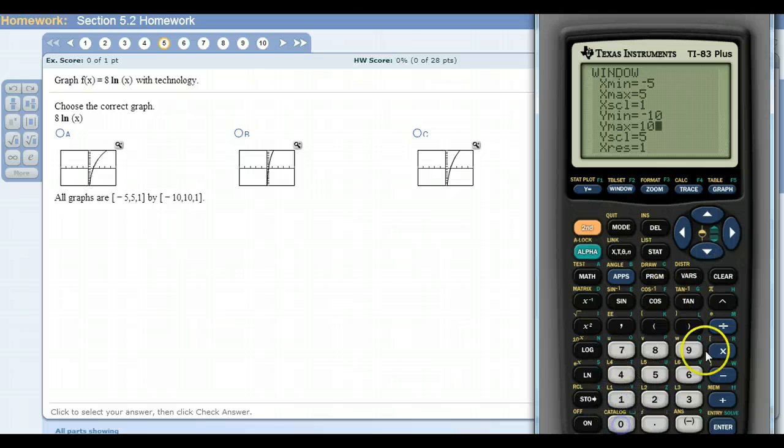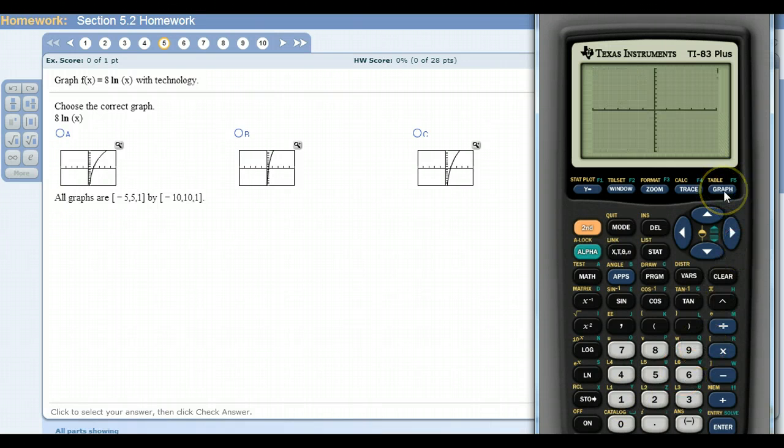Okay, now when I hit graph, now all I'm doing is trying to match up what I see on the graphs here. Okay, so this one already, d is out.